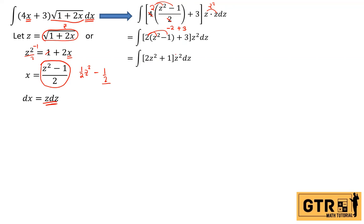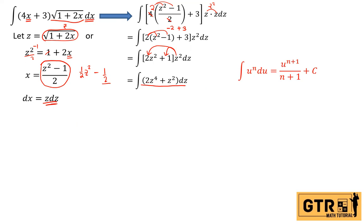We now have a direct formula: the integral of u^n du = u^(n+1)/(n+1) + C. Applying this to each term: the integral of 2z⁴ dz = 2z⁵/5, and the integral of z² dz = z³/3. So our result in terms of z is 2z⁵/5 + z³/3.